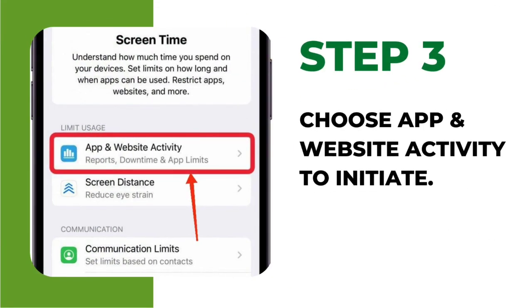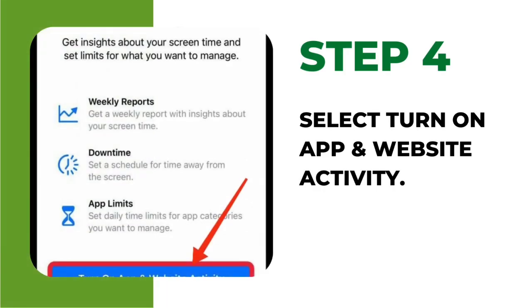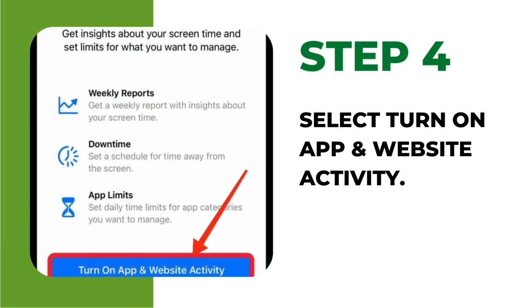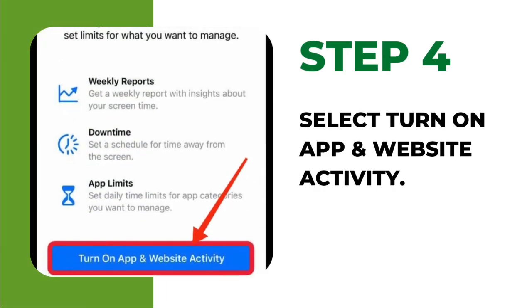Step 3: Choose app and website activity to initiate. Step 4: Select turn on app and website activity.